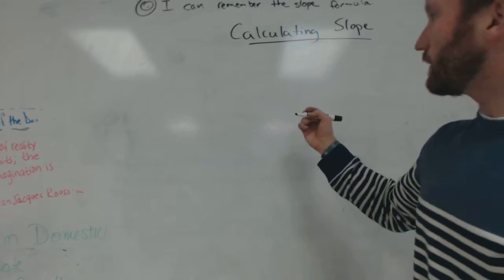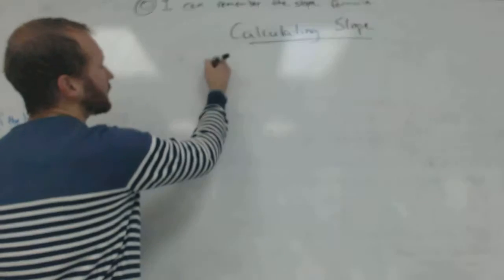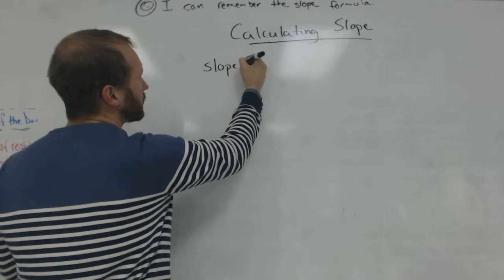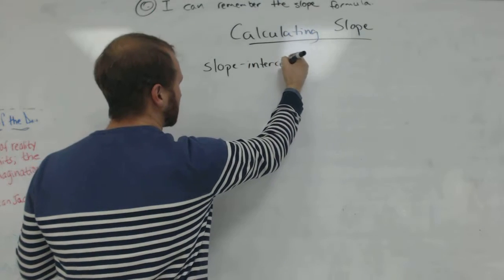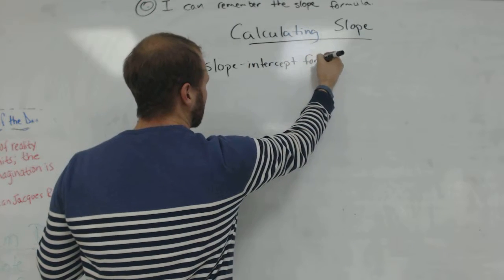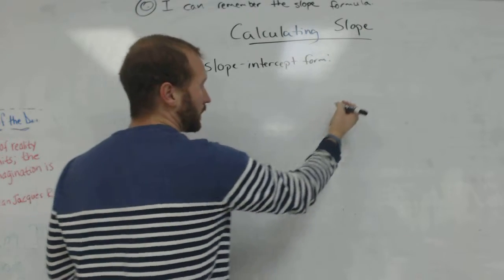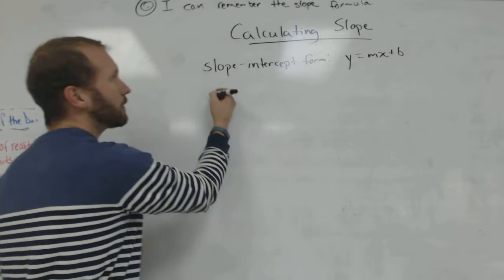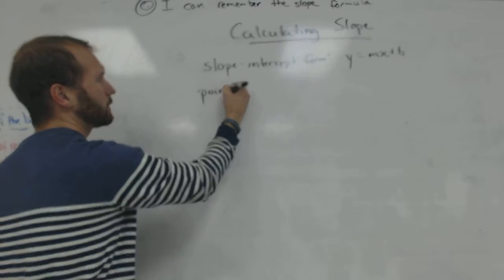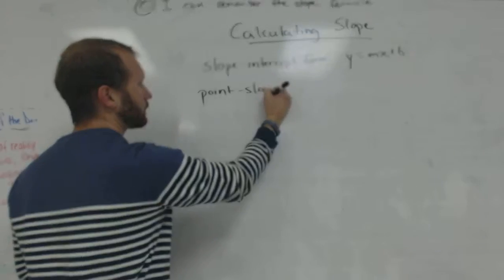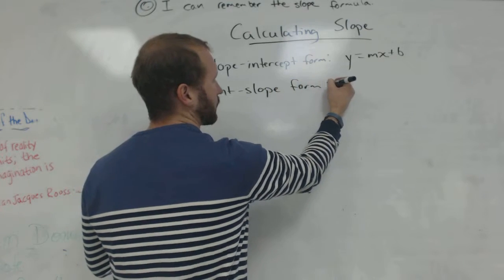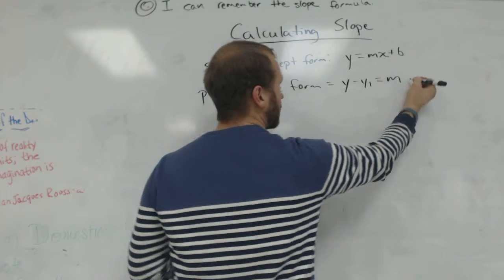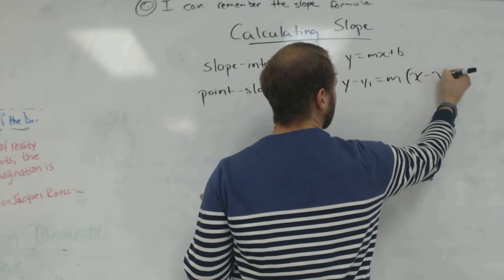Calculating slope. You may remember something called the slope-intercept formula, or form. That was y equals mx plus b. You also may remember point-slope form.